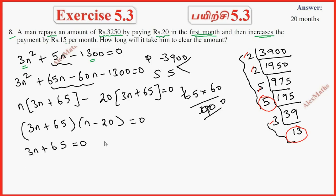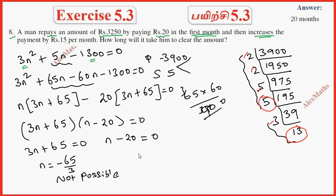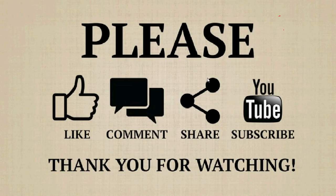So from the first factor, n equals negative 65 by 3, which is not possible. Therefore n equals 20, so the answer is 20 months. Thank you.